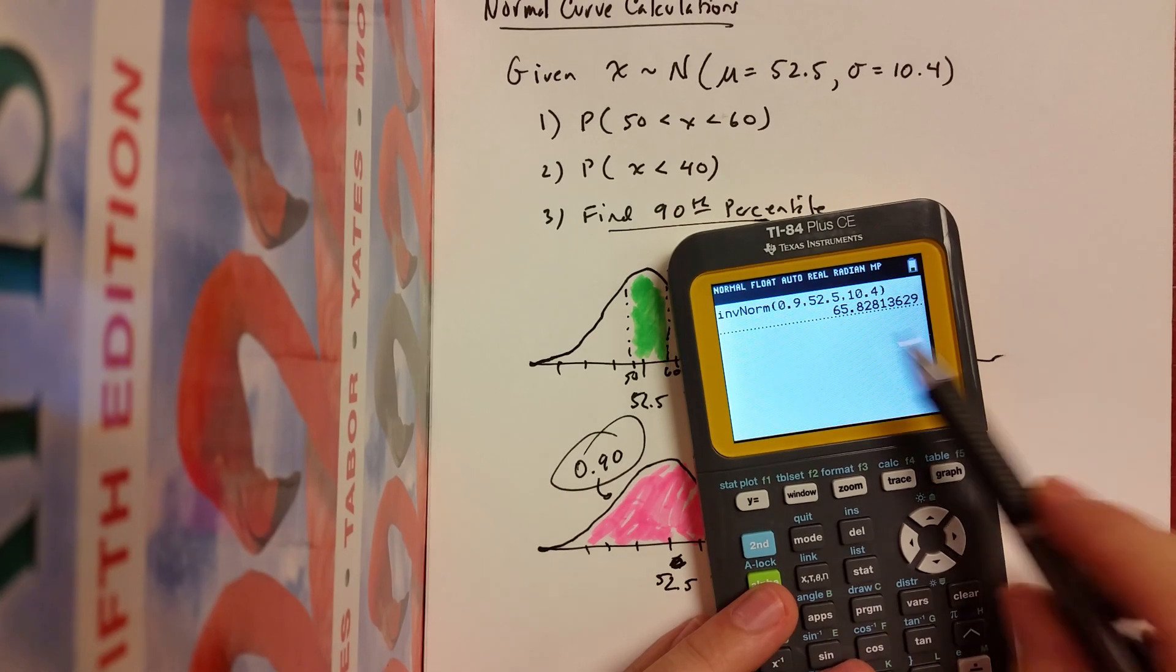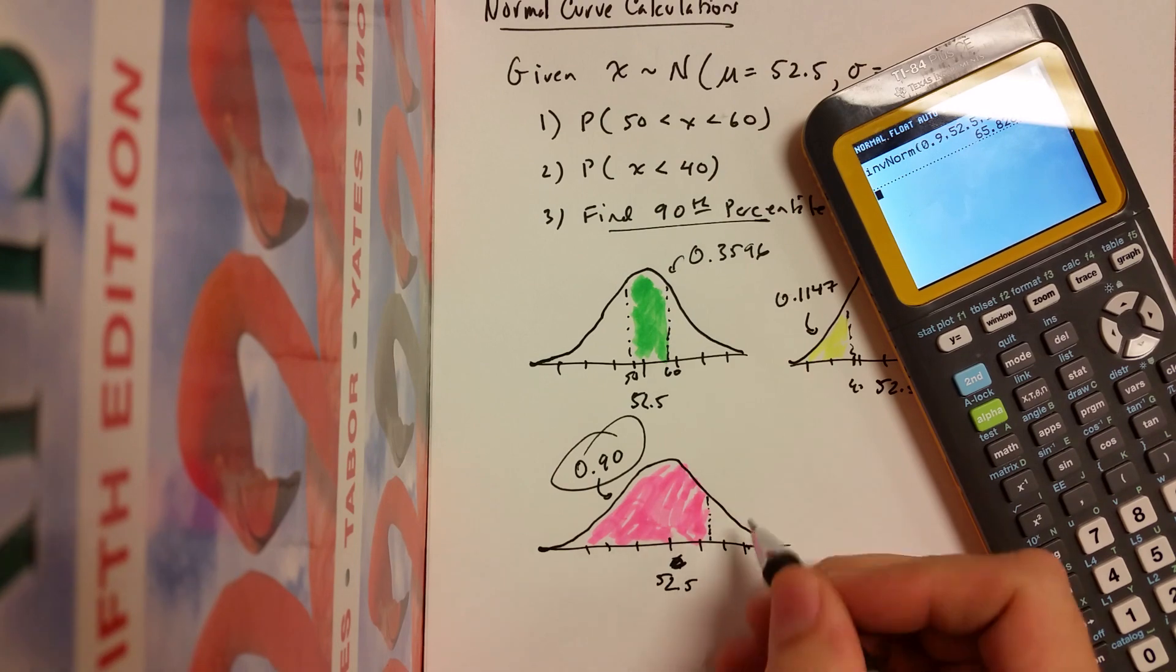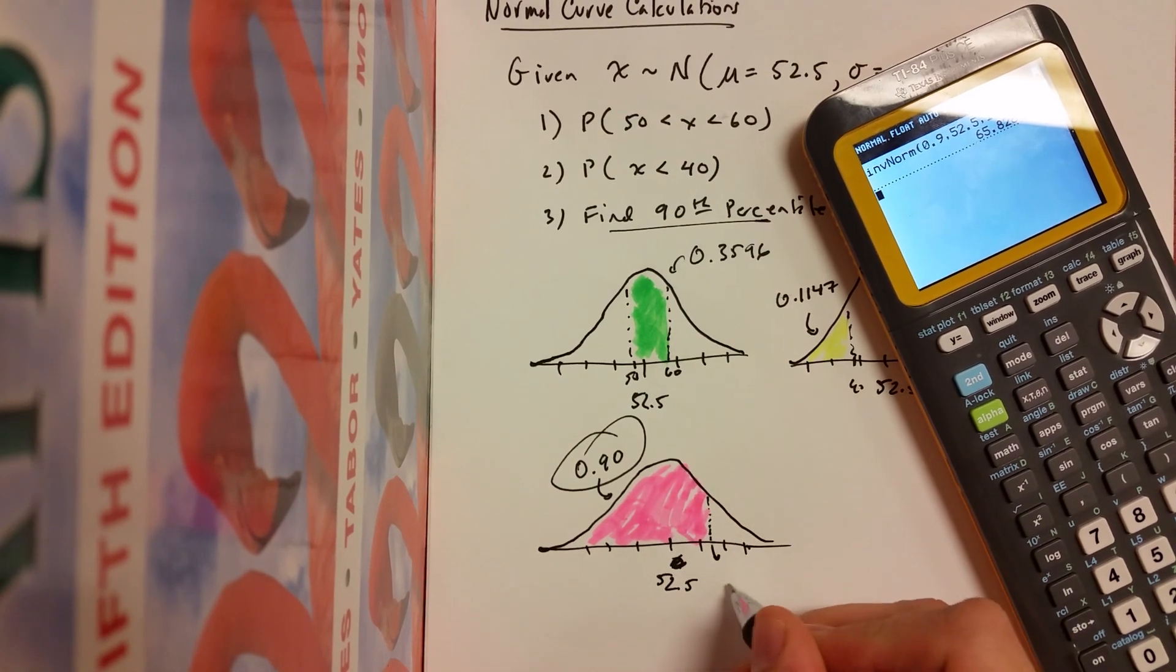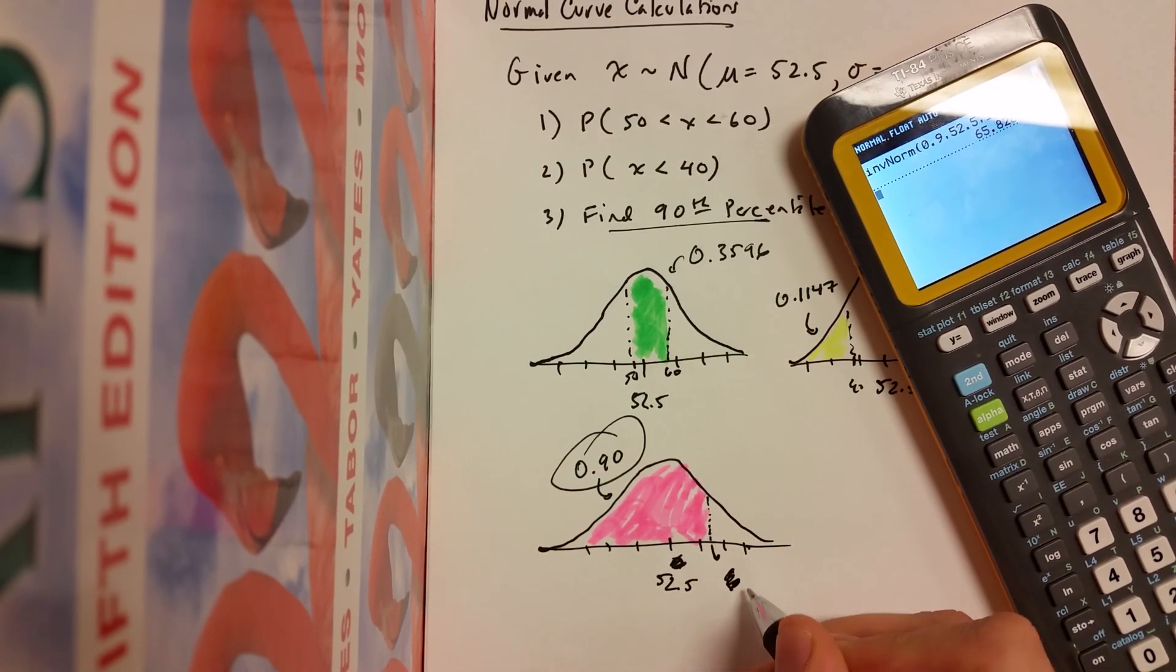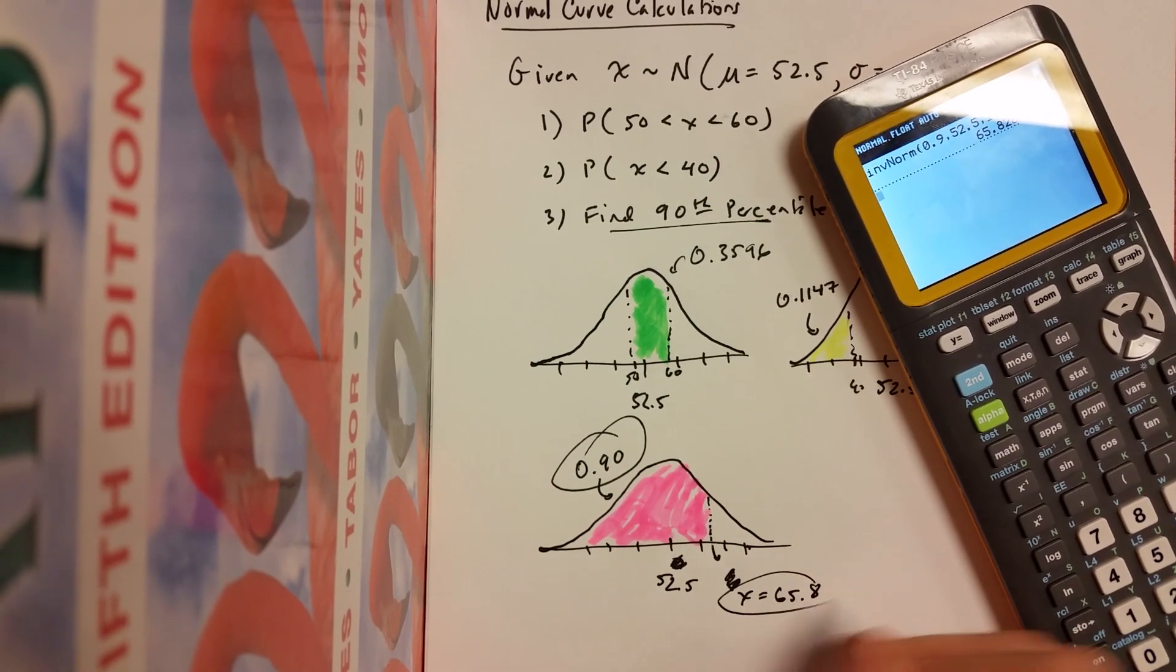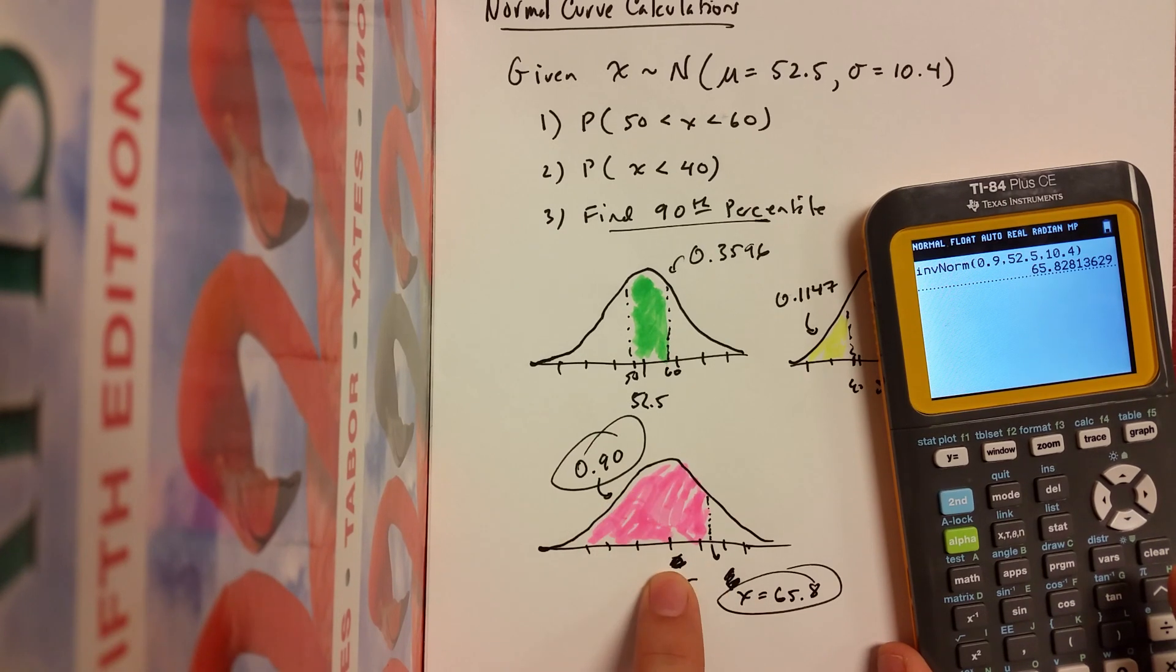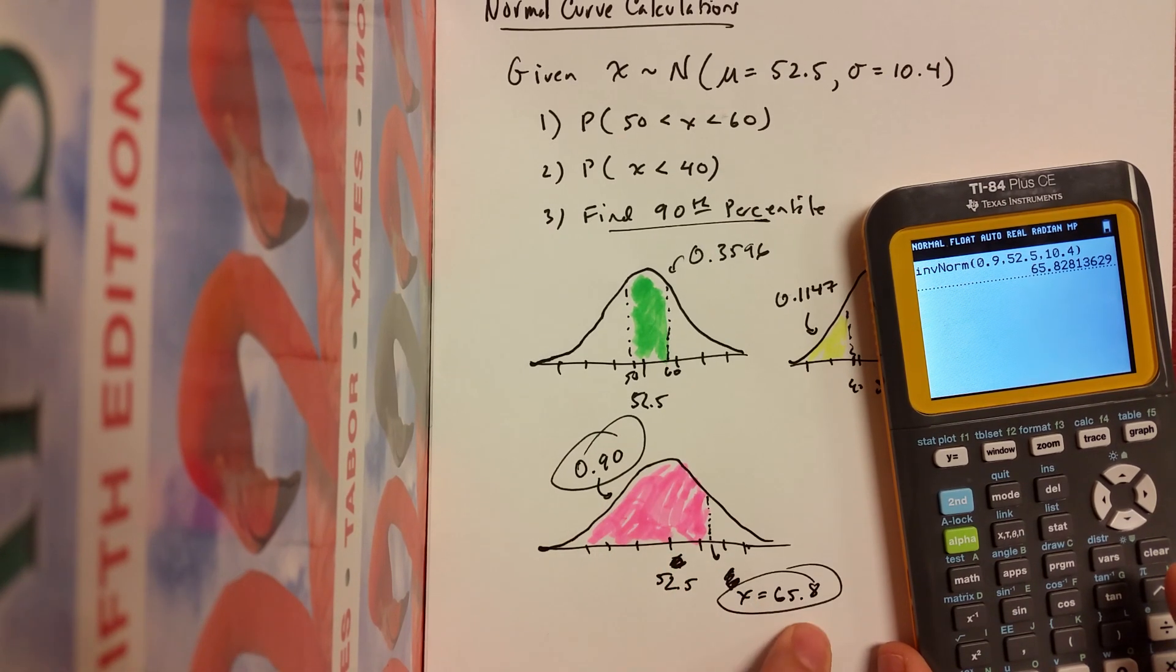Anyway, the calculator just said 65.828. And so what it's saying is that this boundary right here would be where X equals 65.8 approximately. That should be the boundary for the bottom 90%. In other words, this is the 90th percentile.